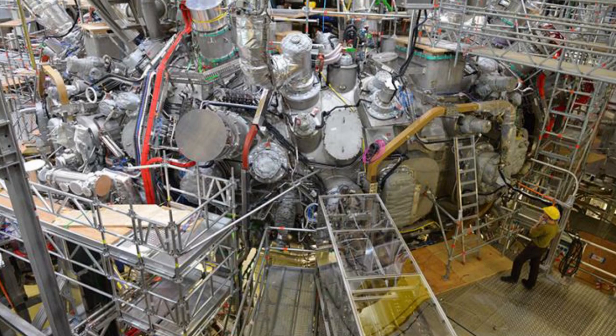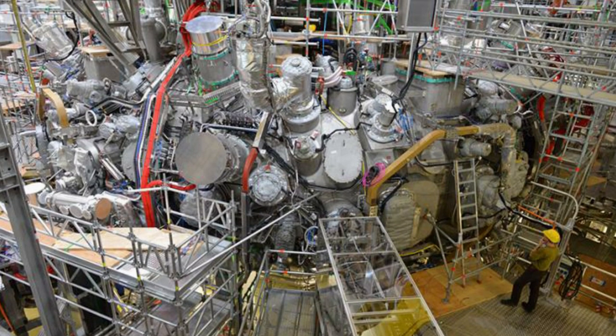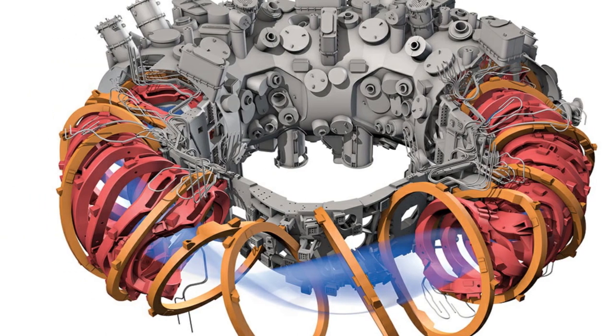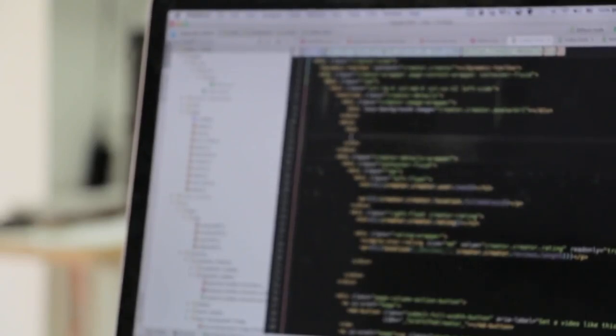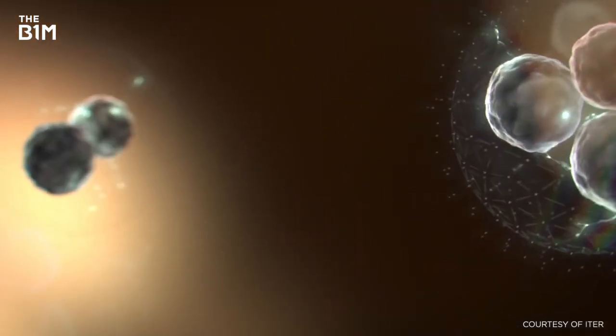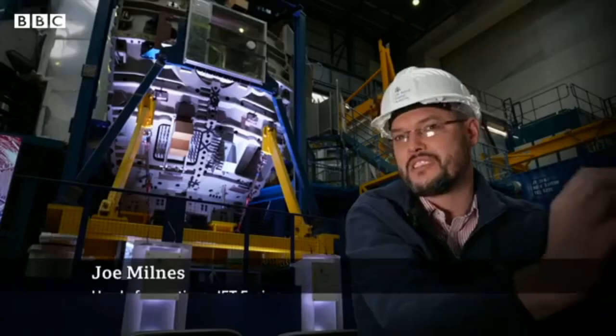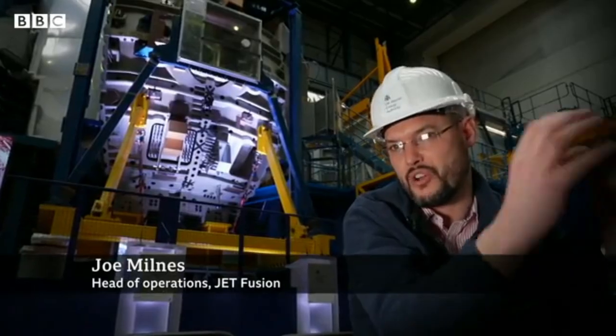The Wendelstein 7-X stellarator was improved to demonstrate the viability of power facilities powered by stellarator-style fusion reactors. The magnetic field that keeps the hot plasma controlled and removed from the vessel's walls was designed with a great deal of computational and theoretical effort to address the shortcomings of prior stellarators. Limiting the plasma's energy losses as a result of the magnetic field's ripple was one of the main goals.